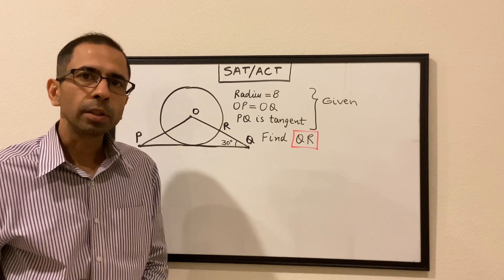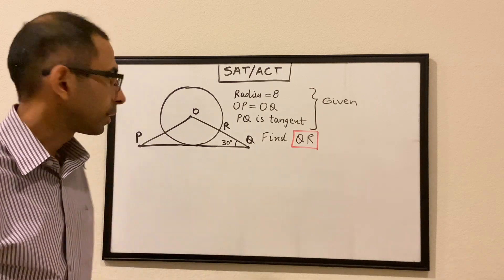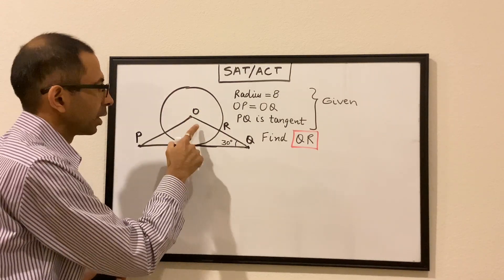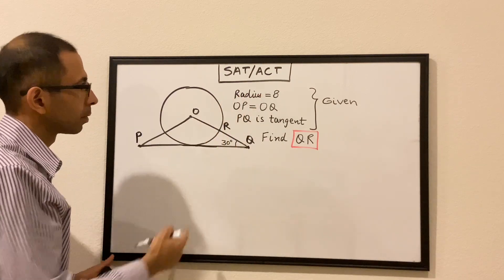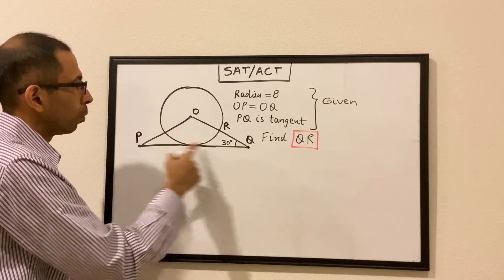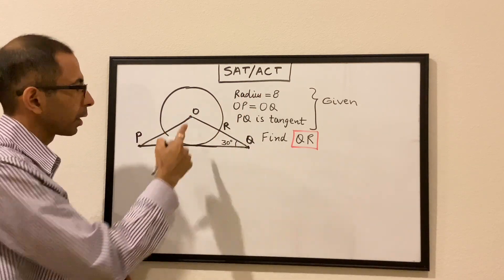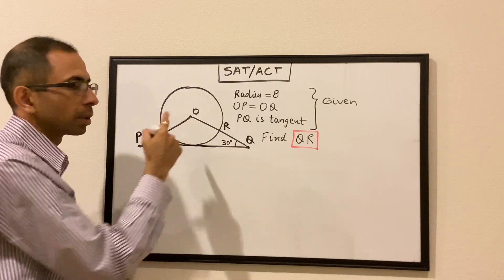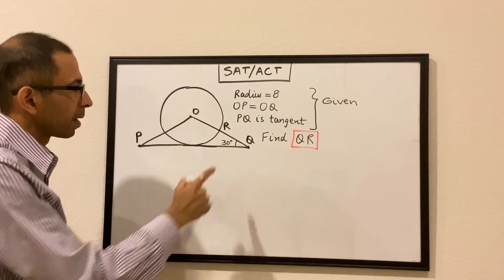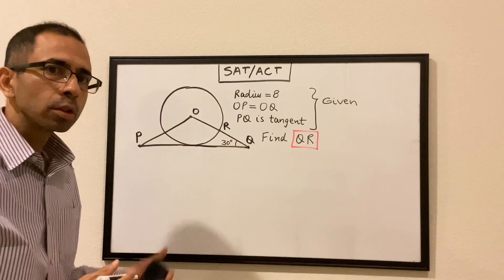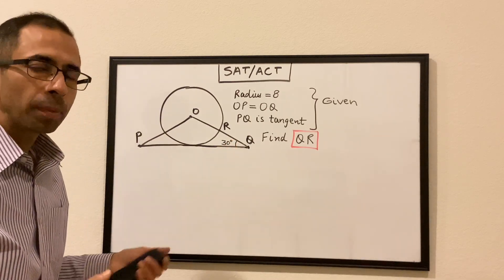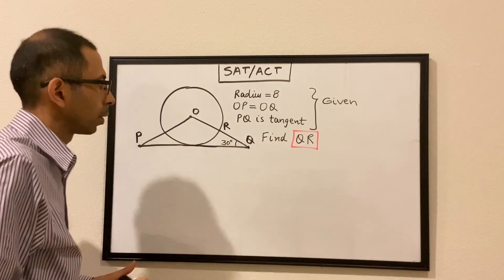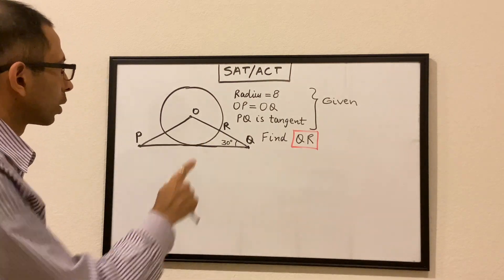Hello and welcome to the third session of the SAT series. We have a circle with center O, the radius of the circle is given as 8. We have a triangle OPQ such that OP is equal to OQ, and PQ is the tangent to the circle. This angle is given as 30 degrees, and we have to find the length of QR.